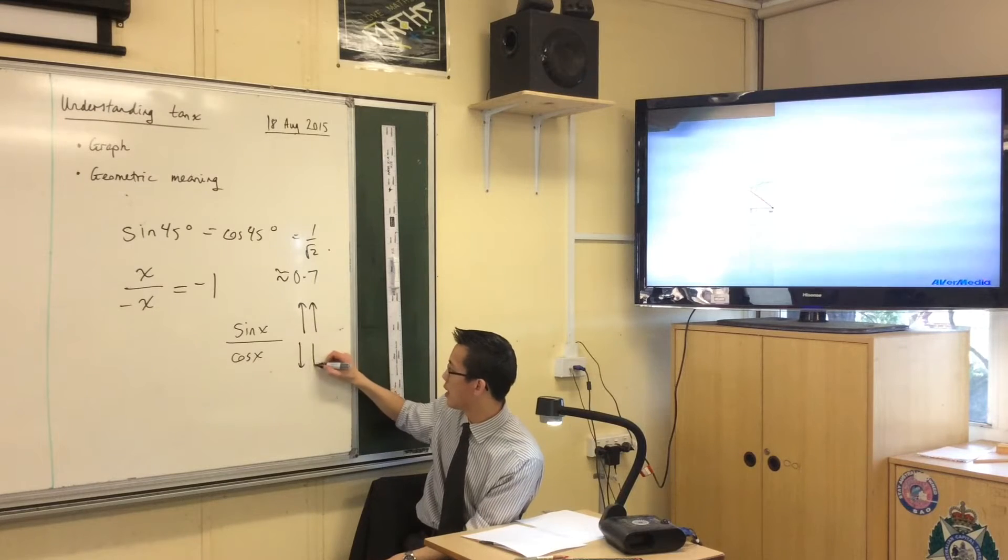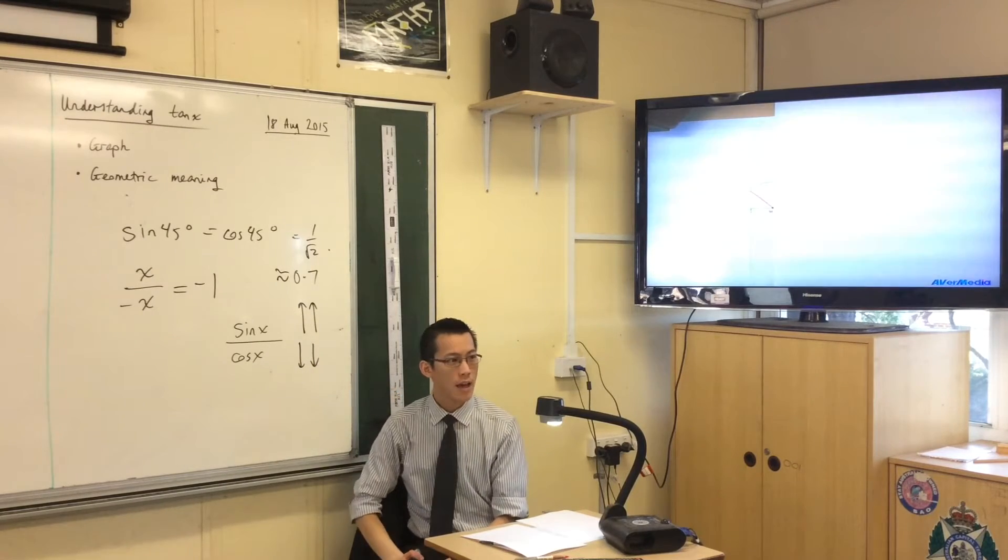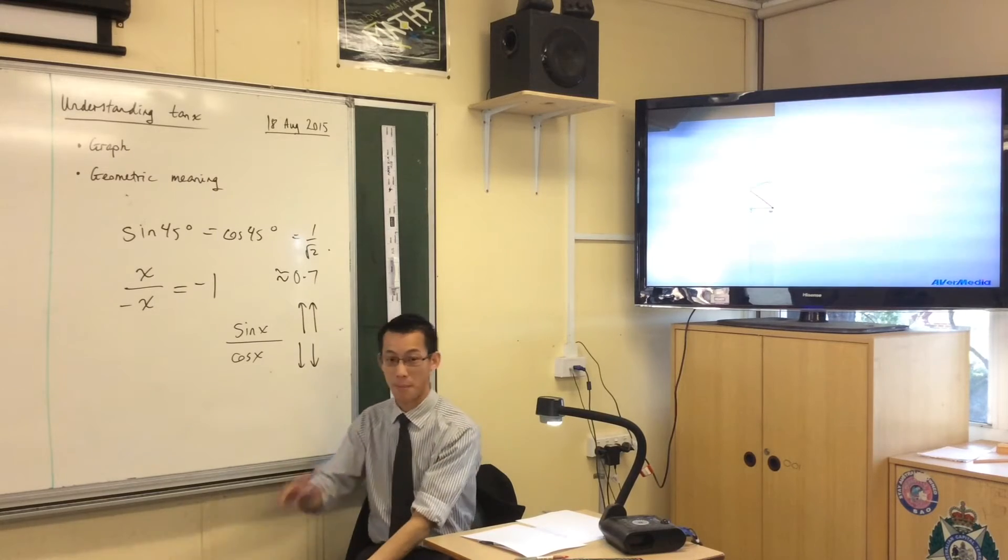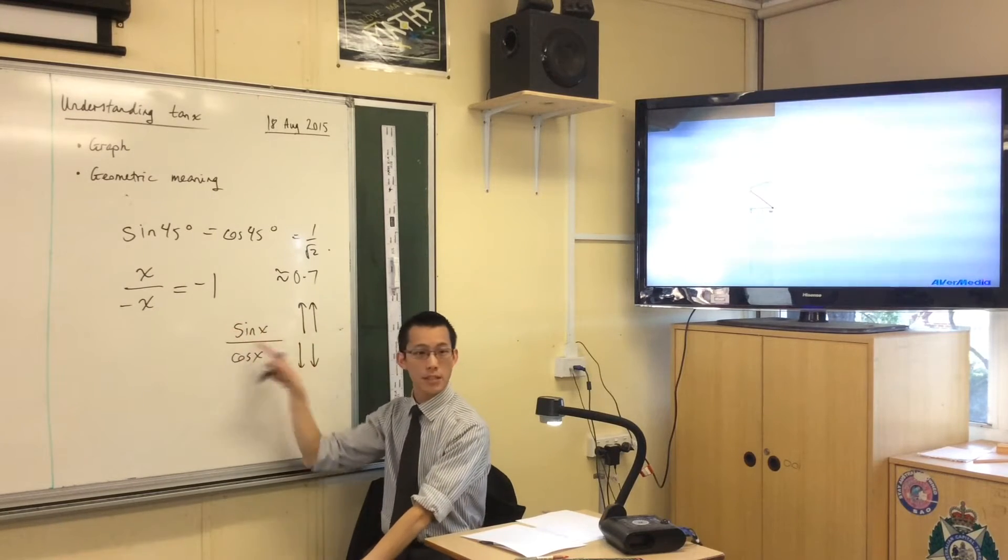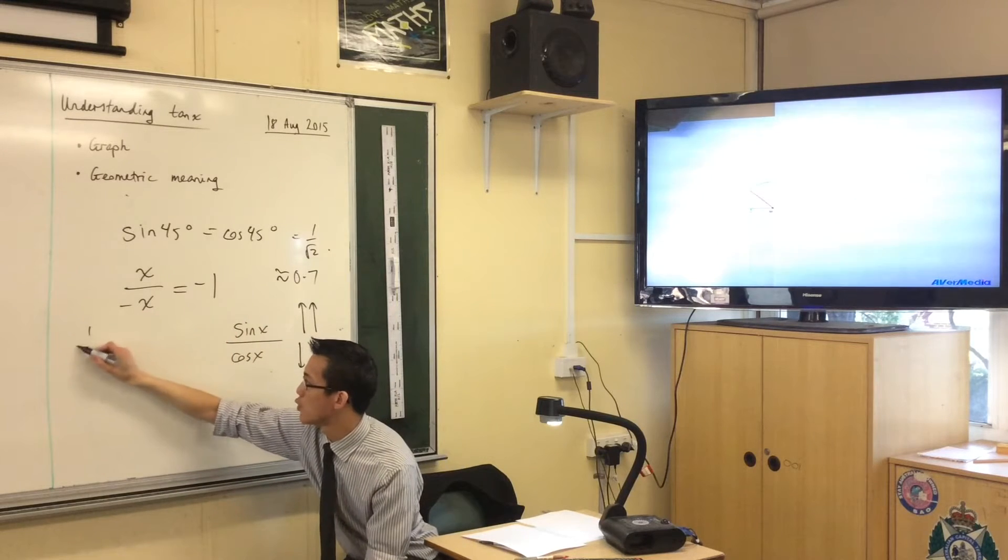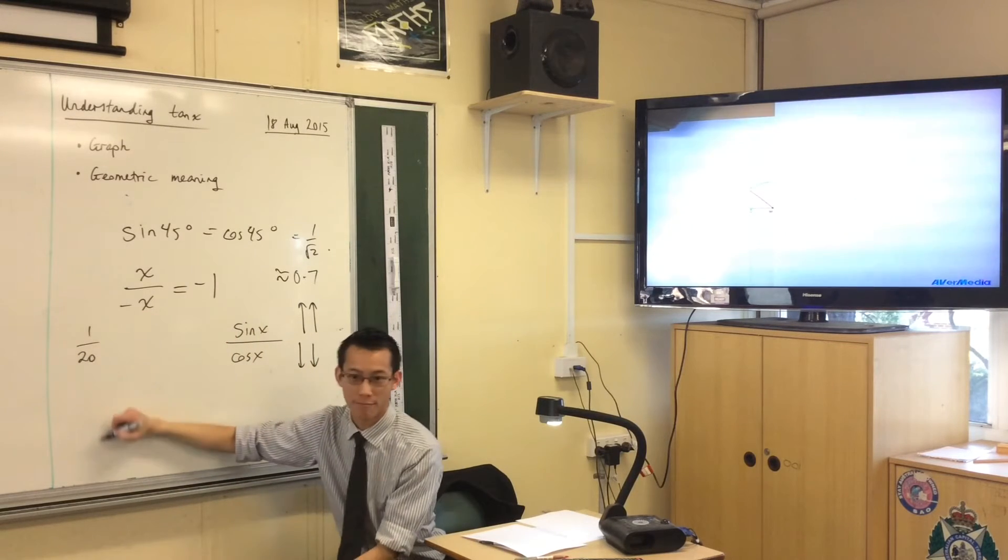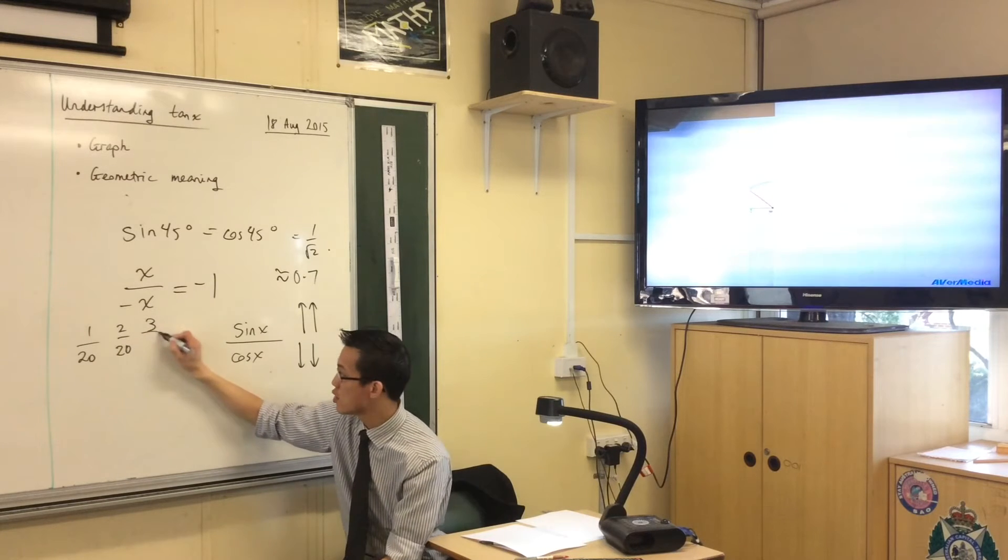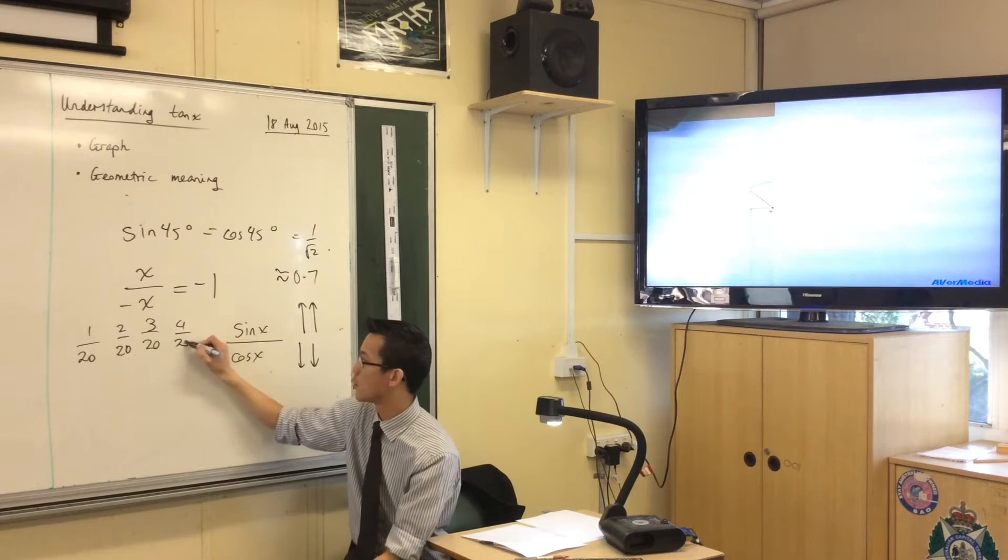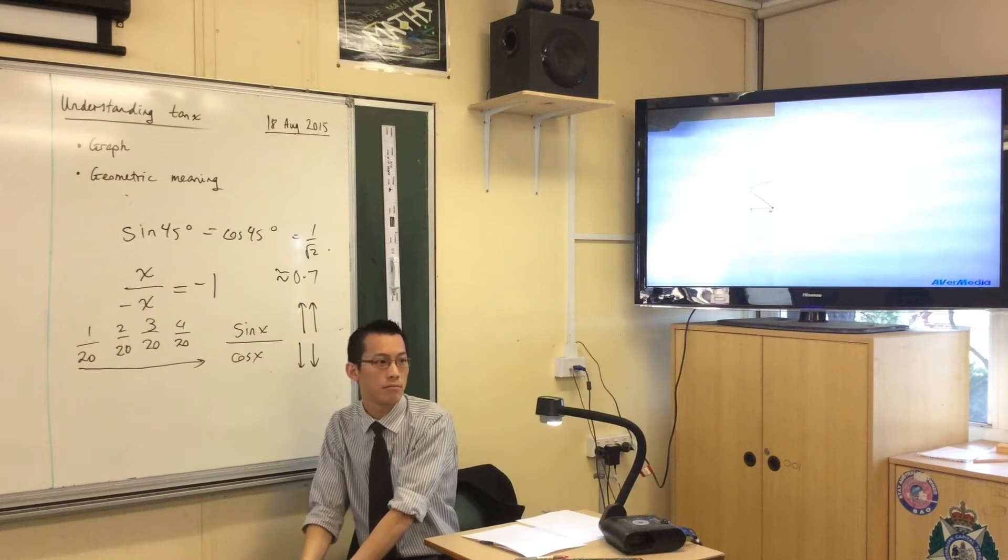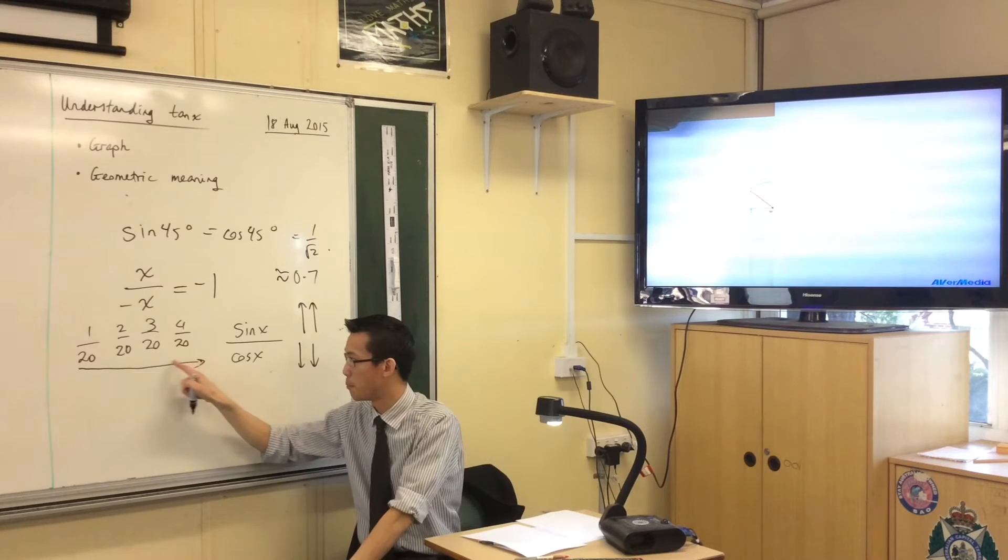Now I want you to think about fractions for a second. Let me give you some actual numbers so you can think this through. Let's think about what happens if the numerator of a fraction gets bigger. For example, if I gave you 1 over 20, and then I made the numerator bigger: 2 over 20, then 3 over 20, then 4 over 20. You can see these fractions are progressively getting bigger. These guys are all bigger than the previous ones.